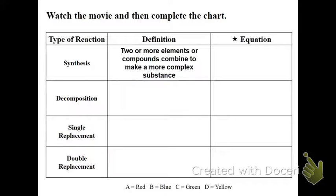First is a synthesis reaction. This is when two or more elements or compounds combine to make a more complex substance. So the general format that we follow is A plus B yields AB, where A is always going to be a red shape, B will always be blue.